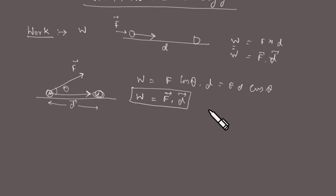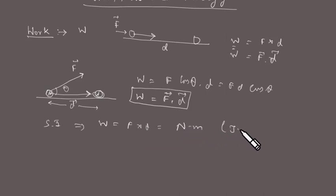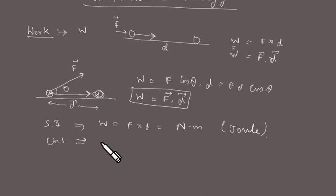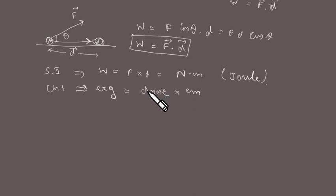The SI unit of work is the Joule, since work equals force into displacement, which is Newton meter, written as Joule or J. The CGS unit of work is erg — dyne centimeter is called erg in the CGS system.